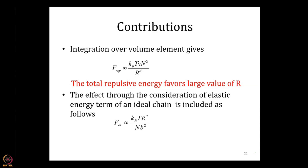Now, the elastic term comes from the exponent of the Gaussian distribution, which is R squared over N times b squared. Since the Boltzmann distribution gives e to the power minus X over k_B T, I rearrange terms to get the elastic free energy as k_B T times R squared over N b squared. The repulsive term for N monomers connected in a chain is k_B T times V times N squared over R to the D, where V is essentially Van der Waals 'a'.